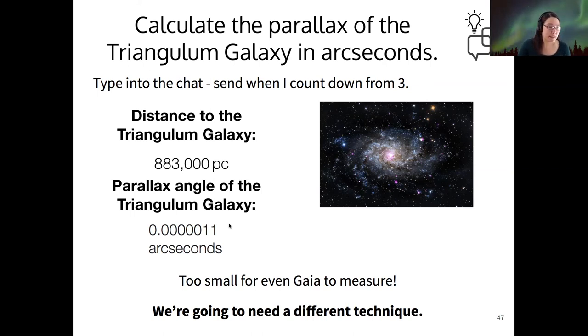So in scientific notation, that's about 1.1 times 10 to the minus 6 arcseconds, a millionth of an arcsecond. This is too small for even Gaia, ESA's finest parallax measuring spacecraft, to measure. So this method of stellar parallax is really useful for measuring the distance to stars within our Milky Way.